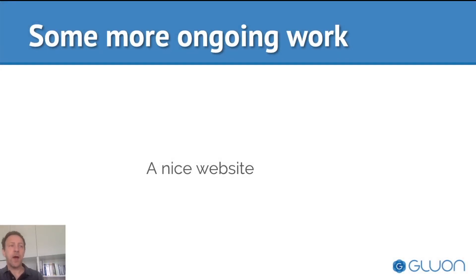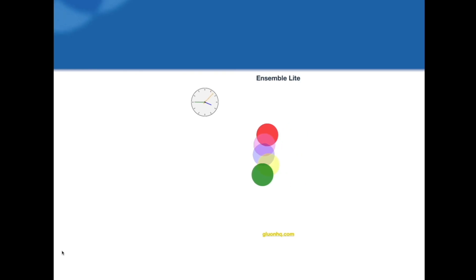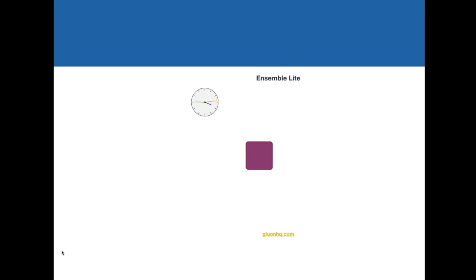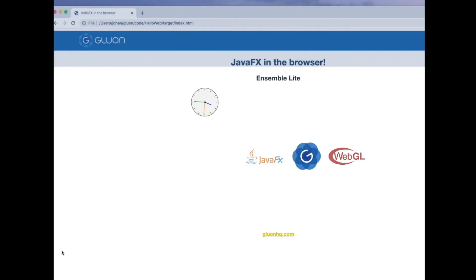That is all I wanted to say today about our telematics demo, our embedded, mobile, and cloud work. Of course, we are making lots of progress at Gluon, and I wanted to show you a nice project that we've been working on more recently and that we are going to make available soon. What you see here looks very much like the typical and well-known Ensemble demo in JavaFX — we have a clock there. It looks like a JavaFX application on desktop, embedded, or mobile. But what this really is, is the same JavaFX application running inside the browser.